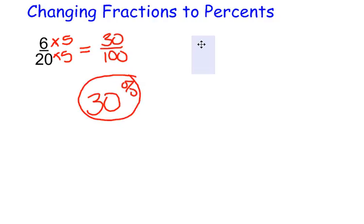Now, when we have a fraction with a denominator that does not go evenly into 100, we need to first change the fraction to a decimal. To do that, we divide the numerator by the denominator.